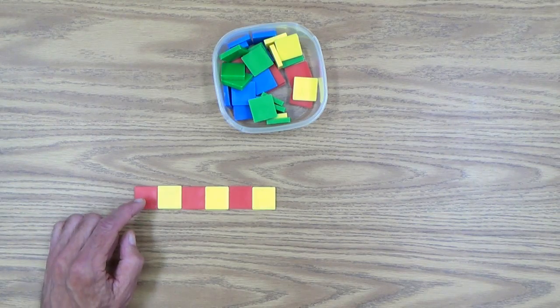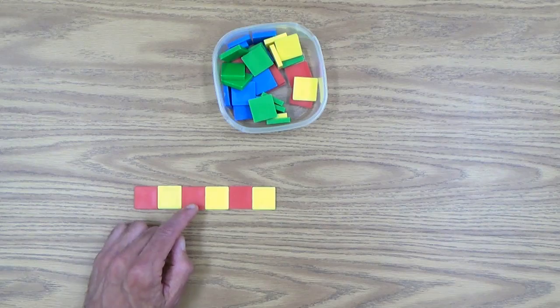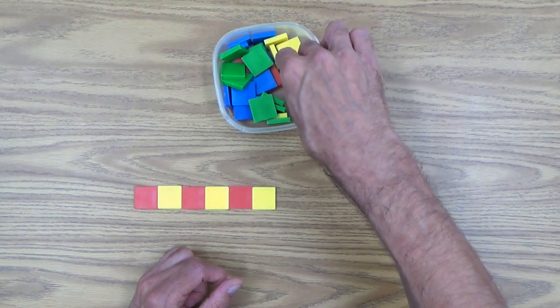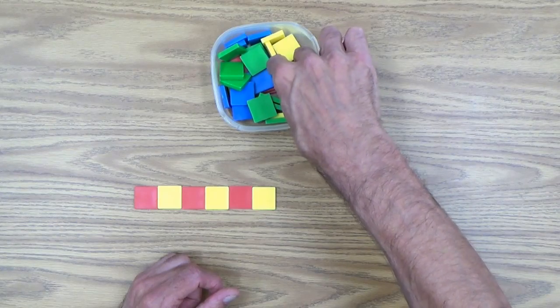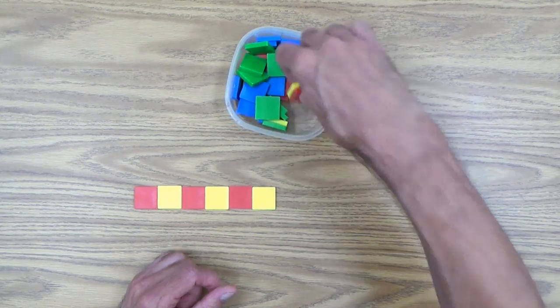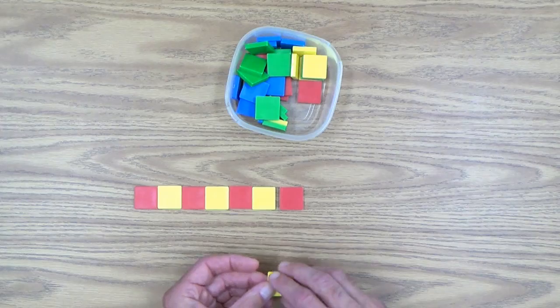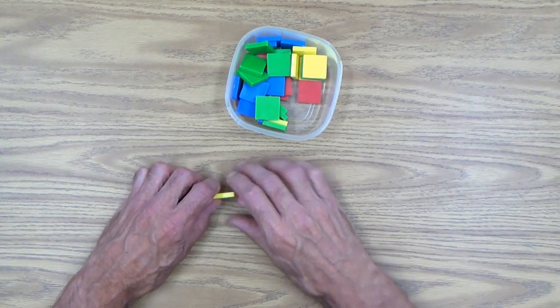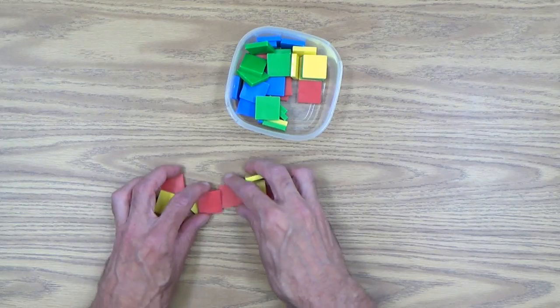It's just an every other pattern. We've got red, yellow, red, yellow, red, yellow. And, of course, if we extended it, and we'll get into that in a little while, having your child extend patterns, it would simply keep going on and on like this. So that's one of the simplest patterns you can do with the pattern blocks.